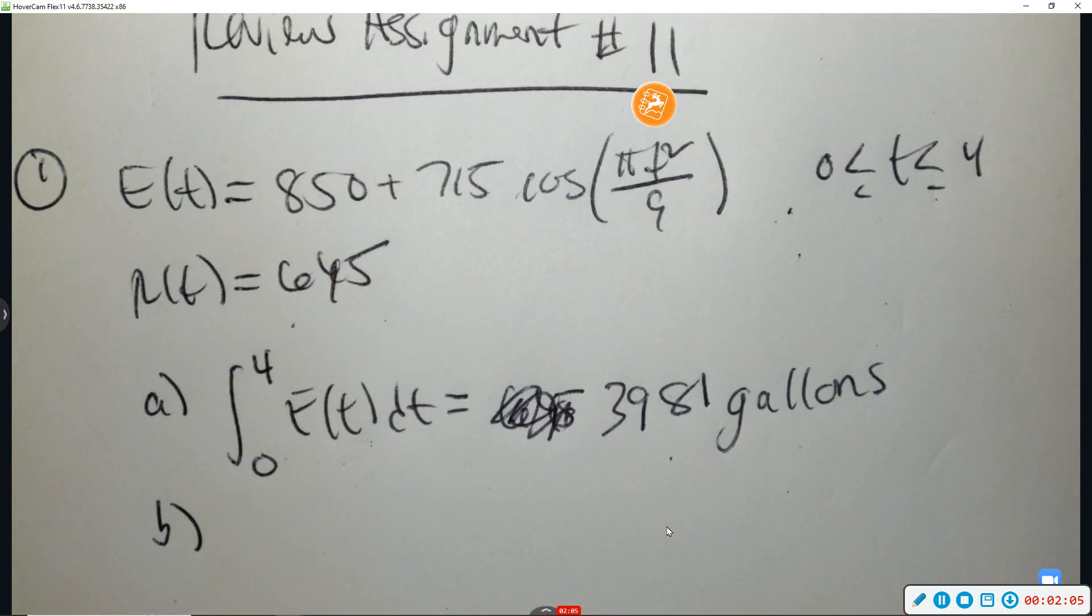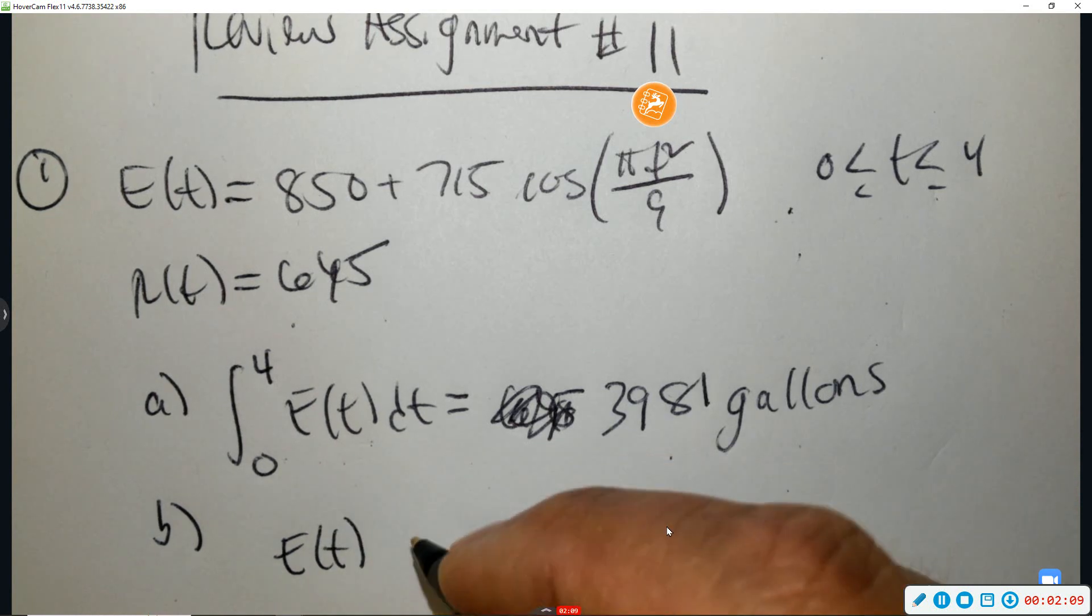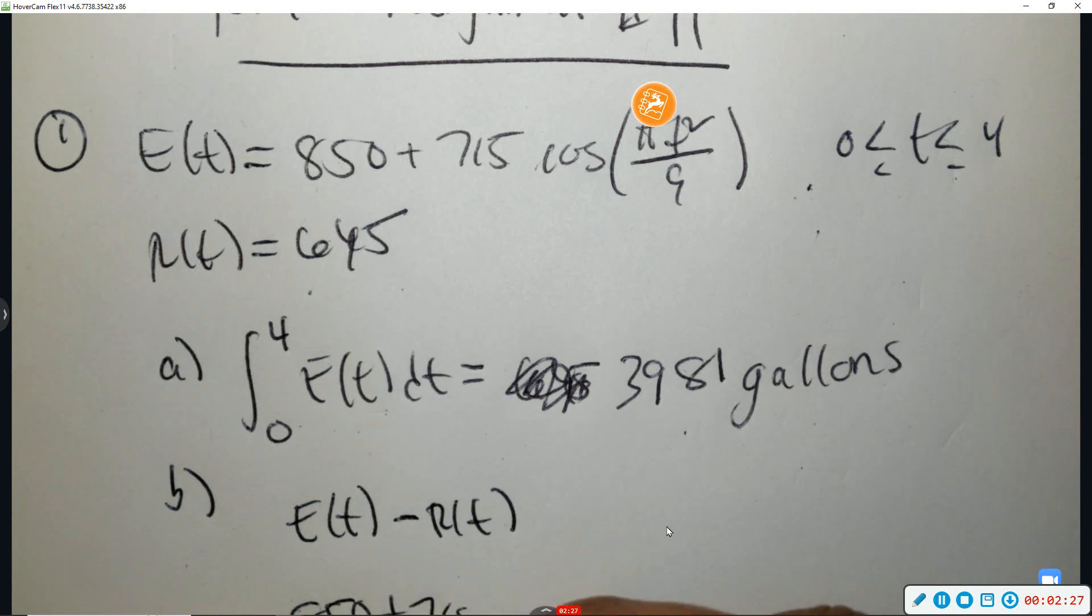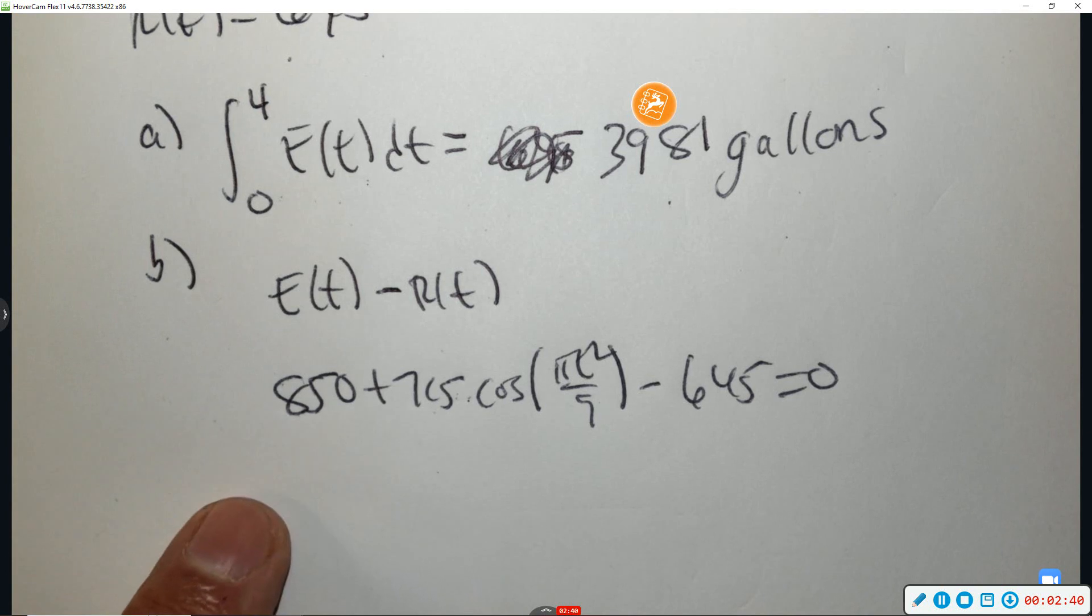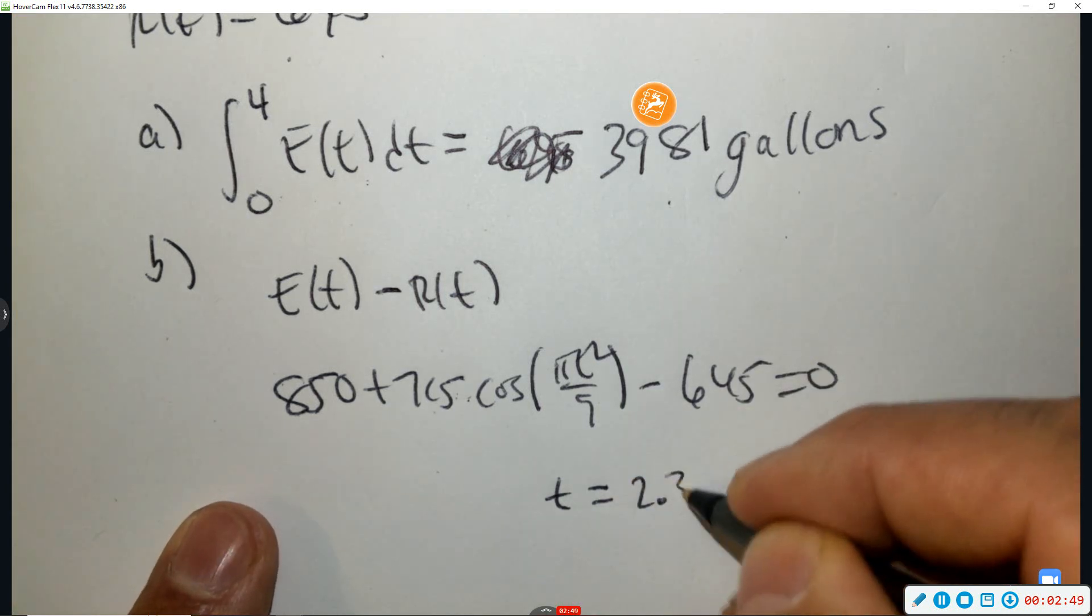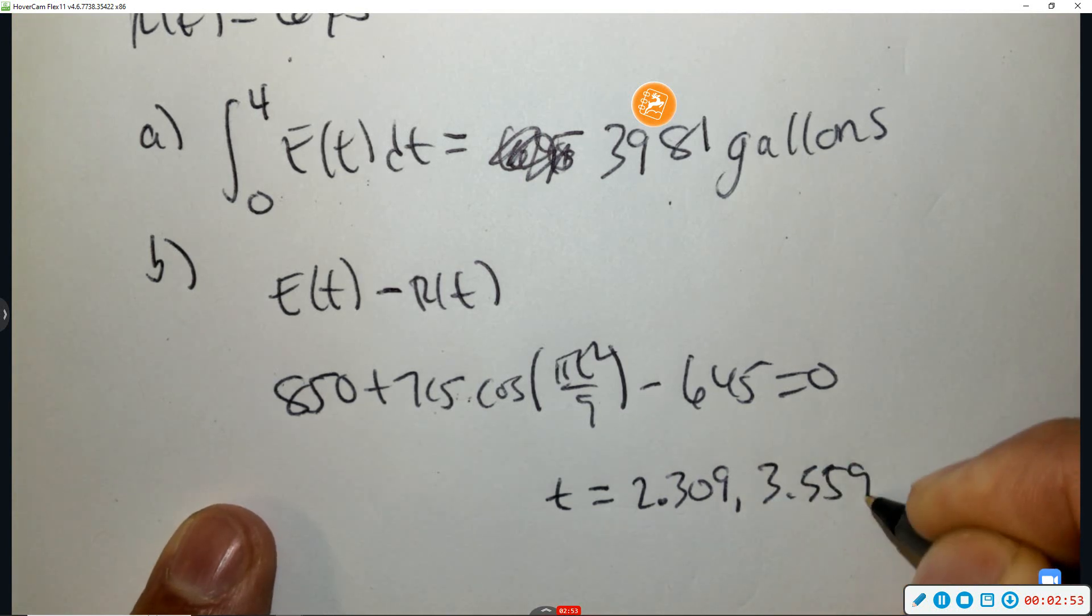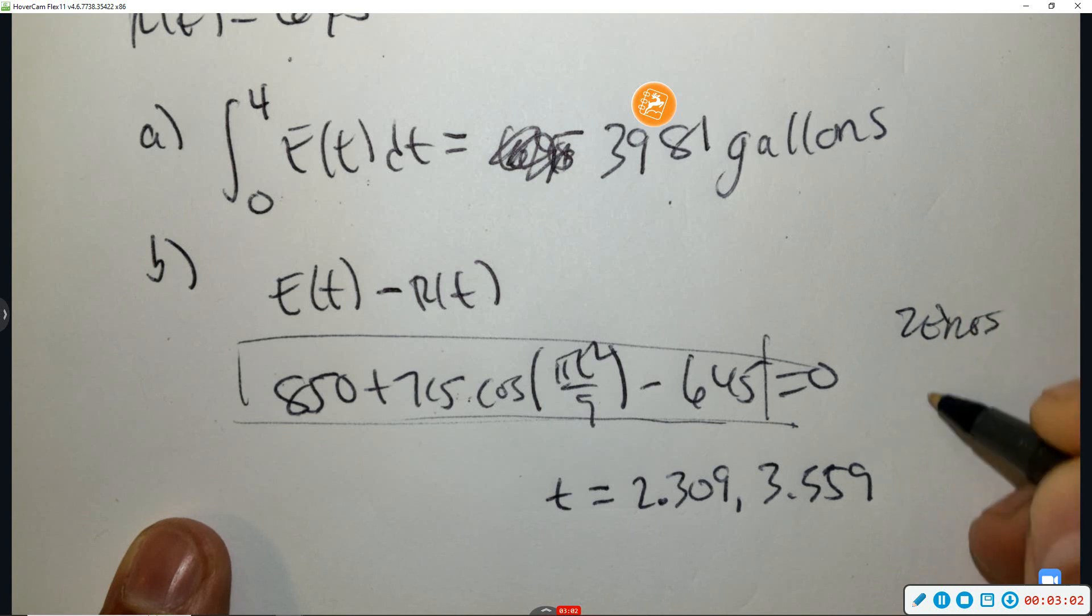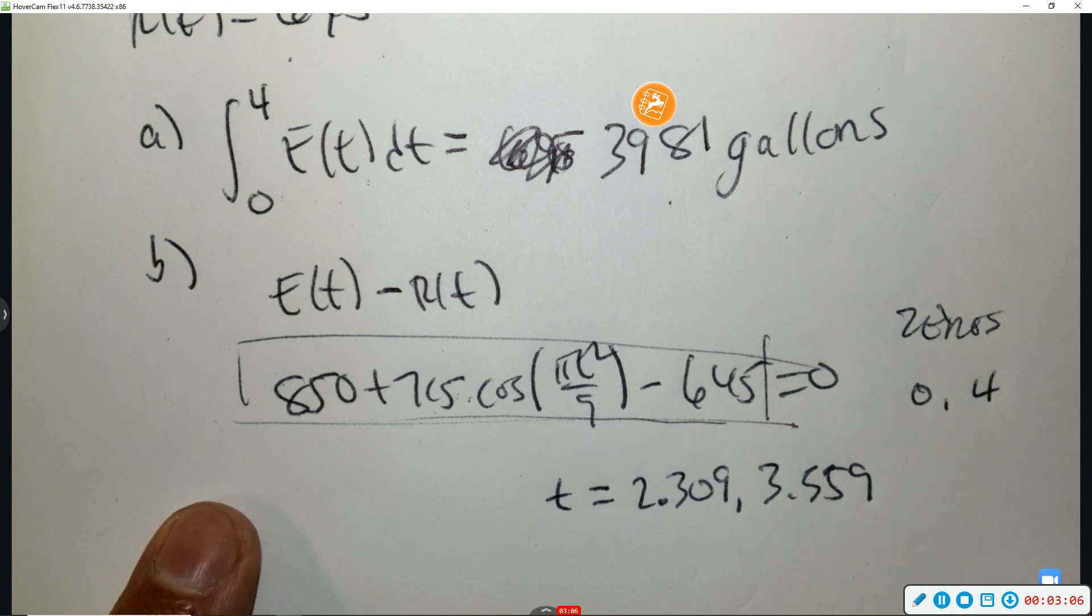So I'm going to create another equation where you have the amount entering in and then subtract the amount removing. So I'm going to plug in 850 plus 715 cosine, and I'm going to make it equal, subtract 645. These are already derivatives. And I'm going to make it equal to zero to find the critical values. So use your calculator. I would graph and find where it's equal to zero. And the two answers are 2.309 and 3.559.